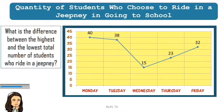What is the difference between the highest and the lowest total number of students who ride in a jeepney? The answer is 25. The highest total number is 40 minus lowest total number, which is 15.